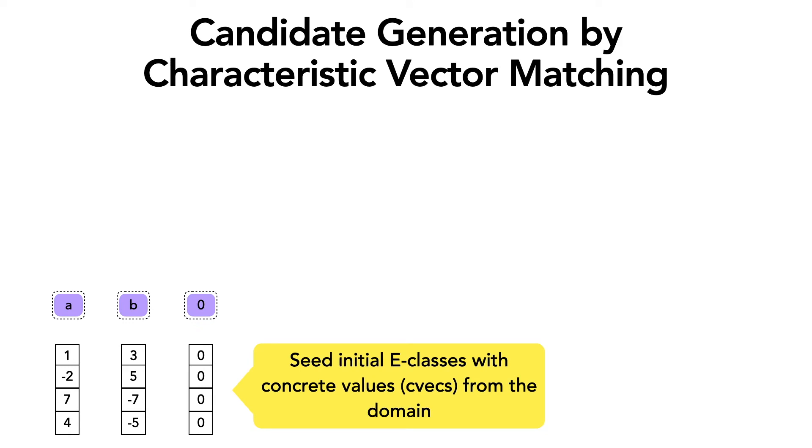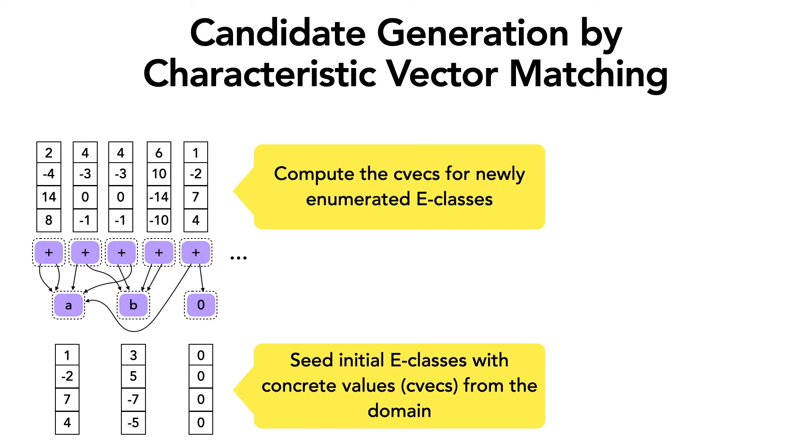Initially, the term e-graph is seeded with some variables and useful constants from the domain, and their e-classes are associated with initial CVECs or characteristic vectors. You can see our paper for details on how to effectively seed the CVECs, but here we're just going to consider random sampling. Also note that the CVECs for constants like 0 are just the constants. Then as we enumerate over this initial e-graph, we compute the CVECs of the new e-classes that are being added by using the interpreter of the domain.